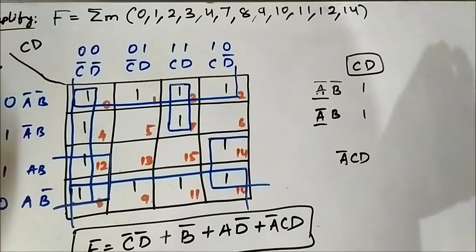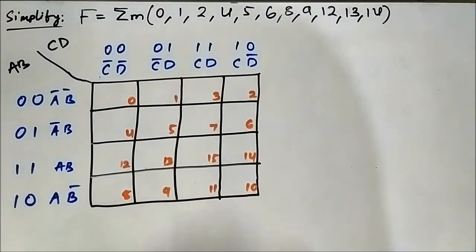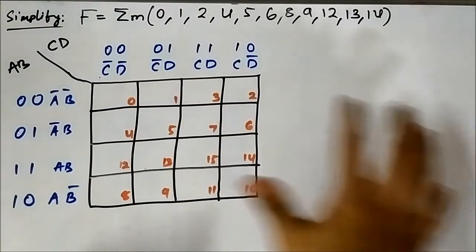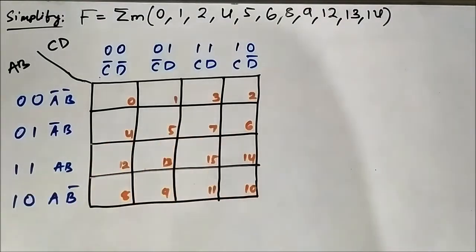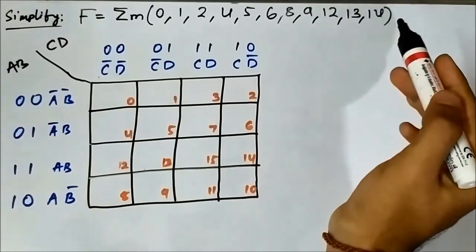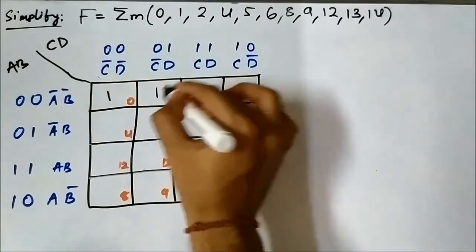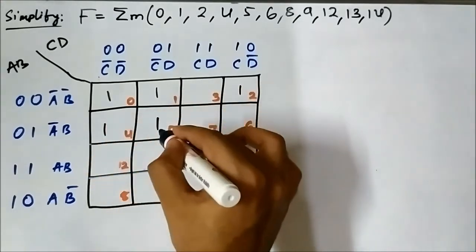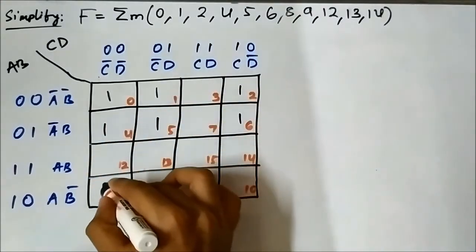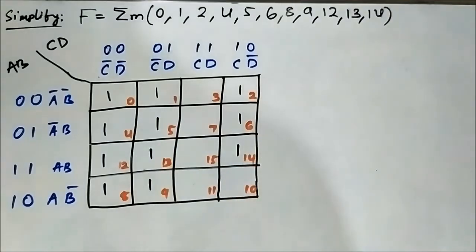So that was the 8th question. Now this is the 9th question related to SOP 4-variable K-map simplification. We have this given boolean function to simplify. The minterms are 0, 1, 2, 4, 5, 6, 8, 9, 12, 13, and 14. We have mapped it into the K-map.